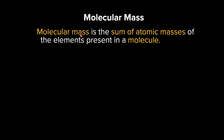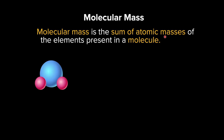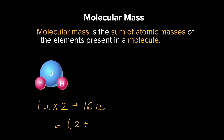Now that we know average atomic mass, let's move on to molecular mass. Molecular mass is the sum of atomic masses of all elements present in a molecule. Let's take the water molecule (H₂O). The mass of one hydrogen atom is approximately 1 u, and since there are two hydrogen atoms, that's 2 u. One oxygen atom has a mass of approximately 16 u. So the molecular mass of water = 2 + 16 = 18 u.